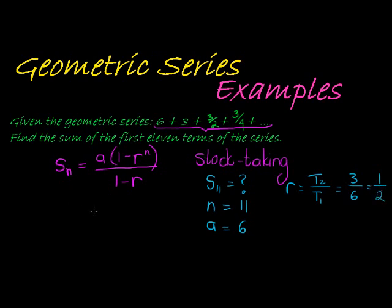All we need to do is go and substitute. So we've got everything. It's a very simple example. A being 3, 1 minus R being 1 over 2 to the power 11, all divided by 1 minus 1 over 2.